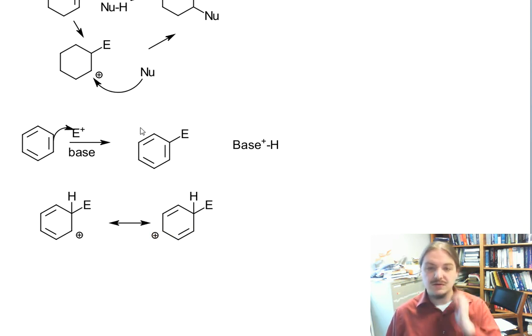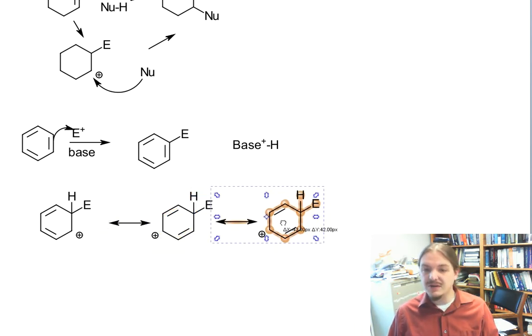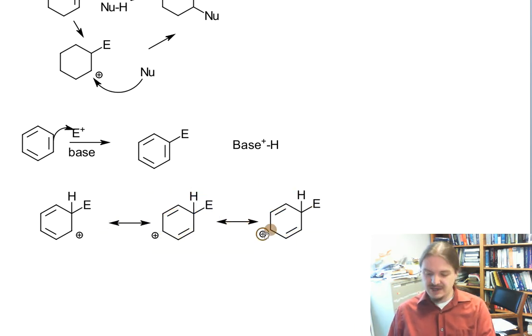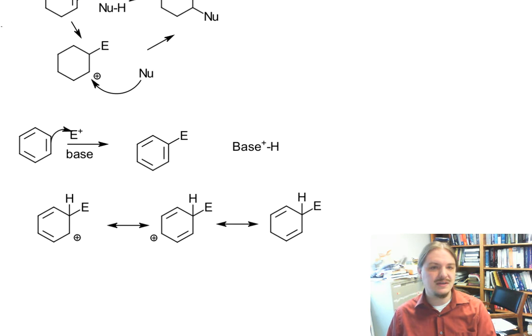So number one difference between alkenes and aromatic rings, the aromatic ring's intermediate is resonance stabilized. So that would immediately perhaps make you think that this reaction is going to behave a little bit differently and that maybe it's even more likely to occur because the carbocation intermediate is stable.